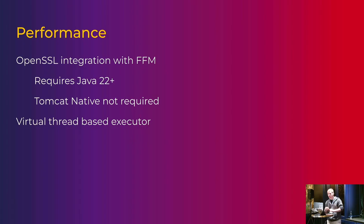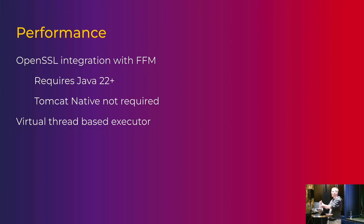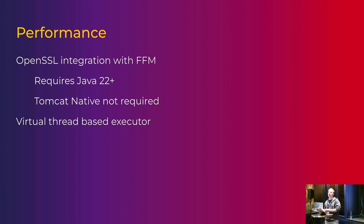On the performance side, if you have Java 22 and run Tomcat on it, you can now use OpenSSL directly via the Foreign Function Memory API without needing Tomcat Native installed. The main advantage is stability — it doesn't crash. The APR connector still has a few kinks we haven't quite resolved. Performance-wise it's about the same as before, probably a little bit slower on average at the moment but improving. The real benefit is stability: you don't need to install another library and can just use the OpenSSL available on your system.